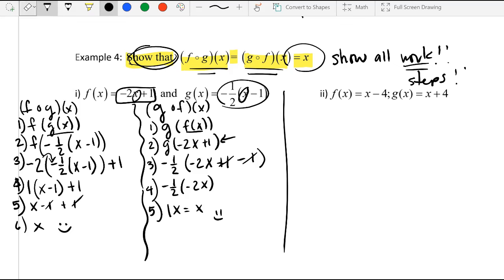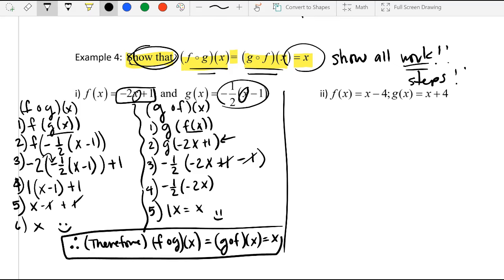So because both compositions equal to x, we can write, Therefore, this three dot means therefore. Therefore, f of g of x is the same as g of f of x, which they are both exactly the same as x. And box this up. So your answer are all of this. Not just this thing boxed, but all of the steps here and all the steps on the left. So make sure we write every single thing down.